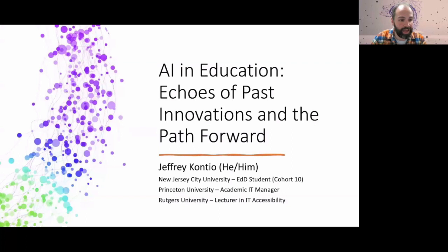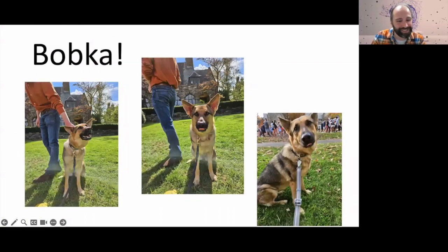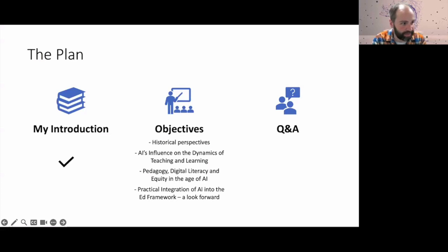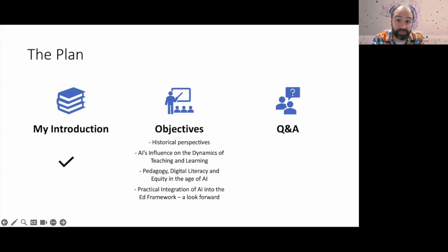I wanted to start with an obligatory slide of my dog Babka, because I always get asked about her — she's in the room with me, so if you hear any whining, I apologize. For our plan this evening: introductions are done. We'll look at historical perspectives of technology and how it has changed education. We'll look at AI's influence on the dynamic of teaching and learning, pedagogy in regards to digital literacy and equity in the age of AI, and practical integrations of AI into the educational framework. Then we'll have time for questions and answers.